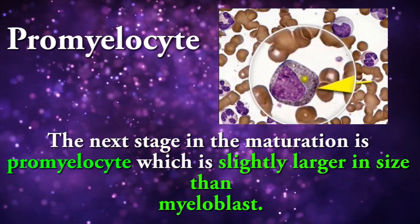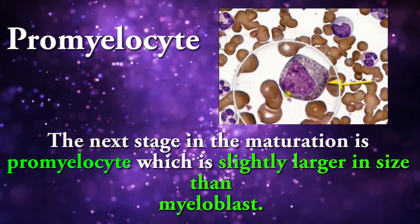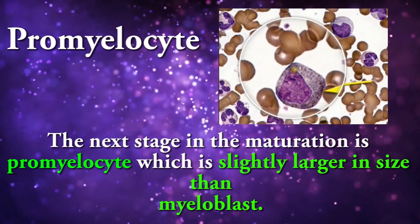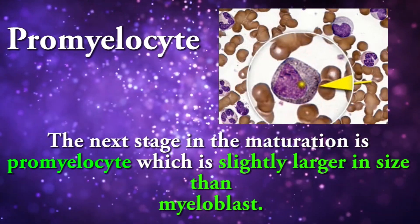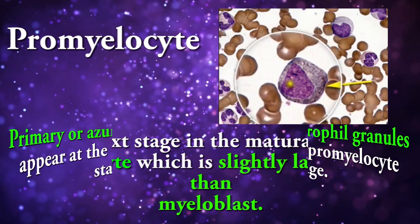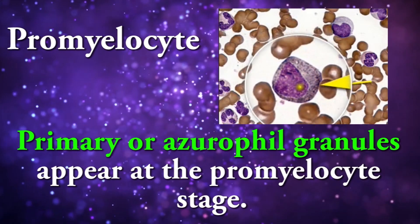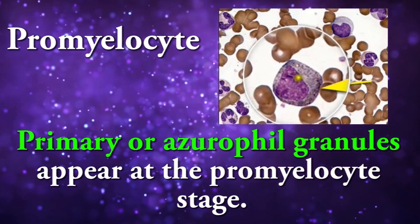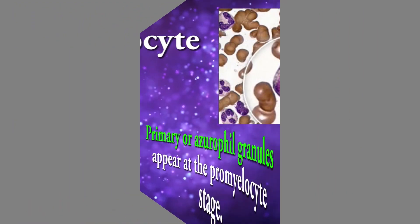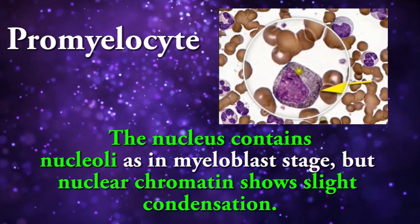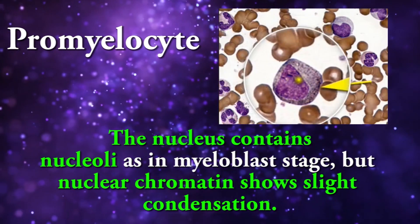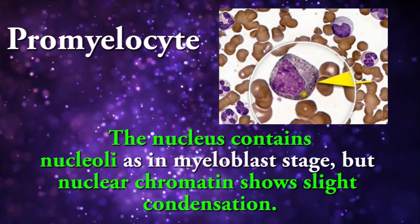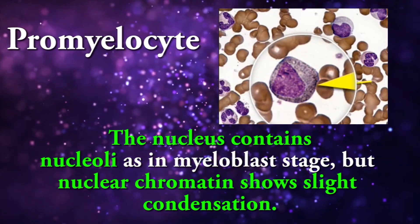Promyelocyte is the next stage in the maturation, which is slightly larger in size than myeloblast. Primary azurophilic granules appear at the promyelocyte stage. The nucleus contains nucleoli as in the myeloblast stage, but nuclear chromatin shows slight condensation.